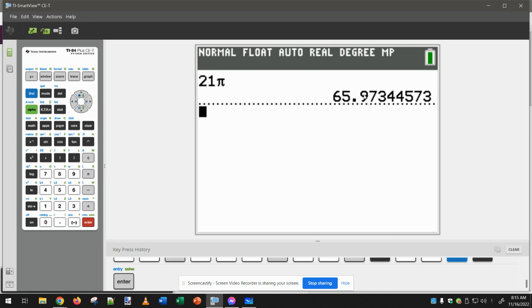then I look after the decimal, I look two places. And then I actually have to look to the third number. So in this case, it's a 3. And if that number is less than 5, then I leave the two numbers alone. So 65.97 would be correct to two decimal places.